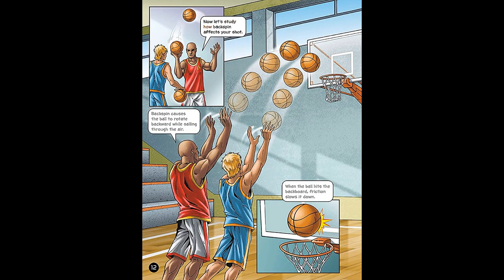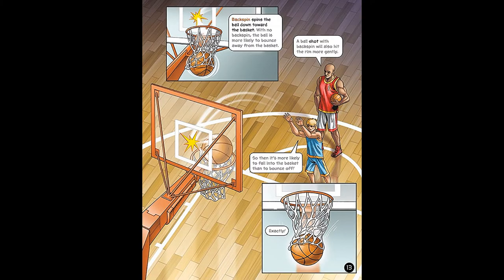Now let's study how backspin affects your shot. Backspin causes the ball to rotate backward while sailing through the air. When the ball hits the backboard, friction slows it down. Backspin spins the ball down toward the basket. With no backspin, the ball is more likely to bounce away from the basket. A ball with backspin will also hit the rim more gently, so it's more likely to fall into the basket than to bounce off.